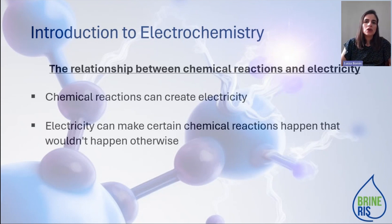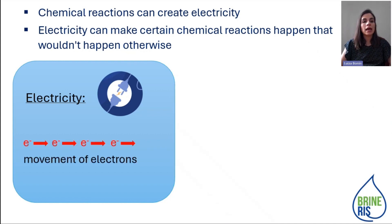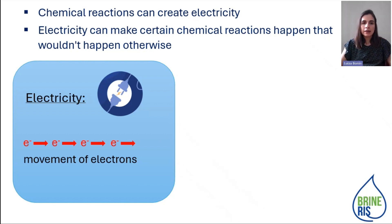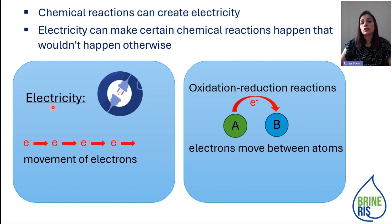So, let's start talking about what is electricity. I think this is even more simple and common for you. If I can simplify this for you, I would say electricity is the movement of electrons. If you have electrons moving from one side to the other, you have electricity. And how would this work in a chemical reaction? If you have an oxidation-reduction reaction, for example, what happens is that element A can give electrons to element B. So we have movement of electrons — we have electricity — and we have a chemical reaction that generates electricity.